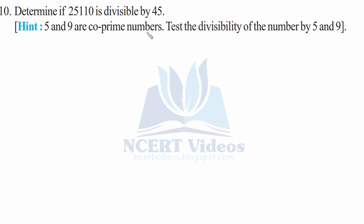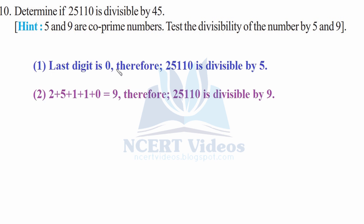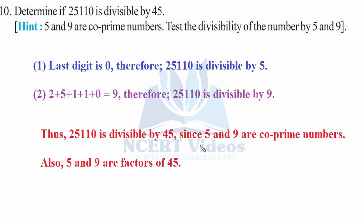Question 10: Determine if 25,110 is divisible by 45. Since 5 and 9 are co-primes, test divisibility by each. The last digit is 0, so the number is divisible by 5. The digit sum is 2 + 5 + 1 + 1 + 0 = 9, so it is divisible by 9. Therefore 25,110 is also divisible by 45, since 5 and 9 are co-prime factors of 45.